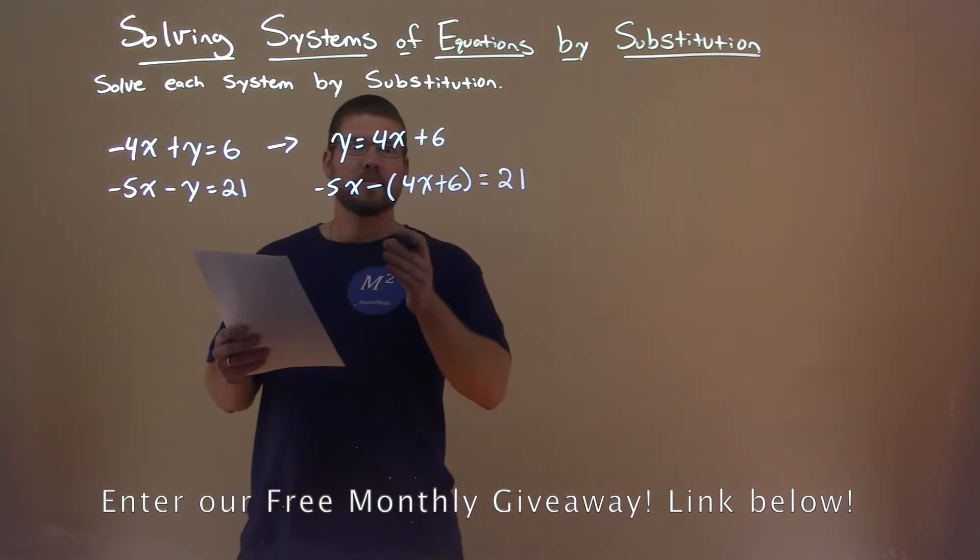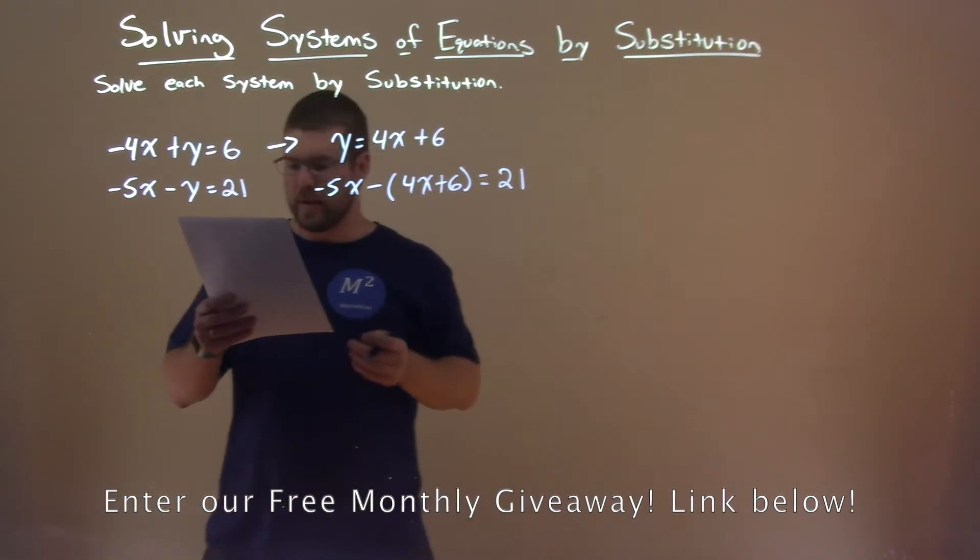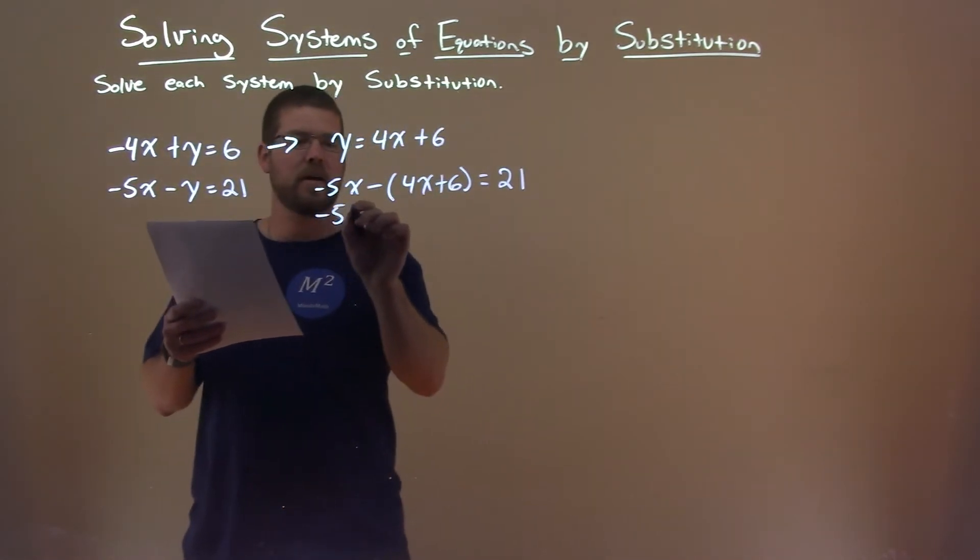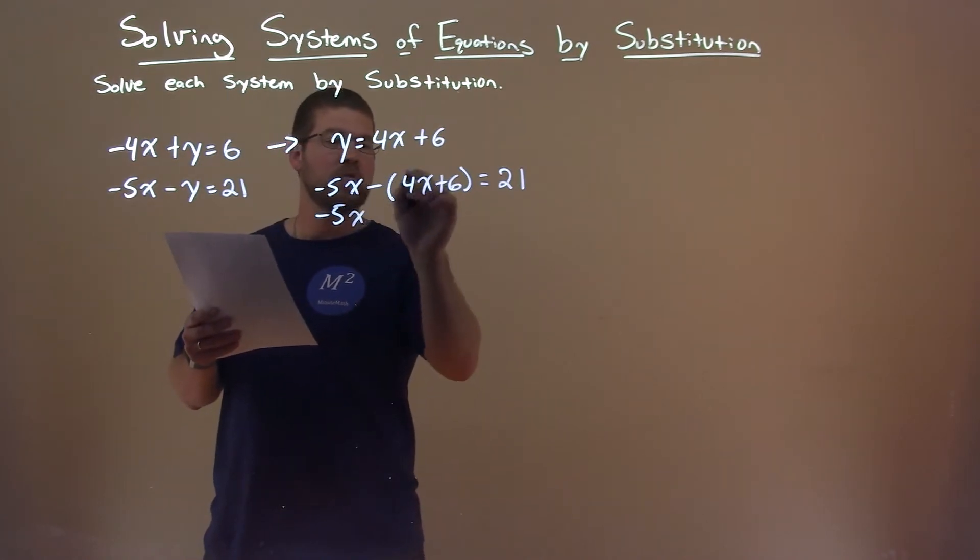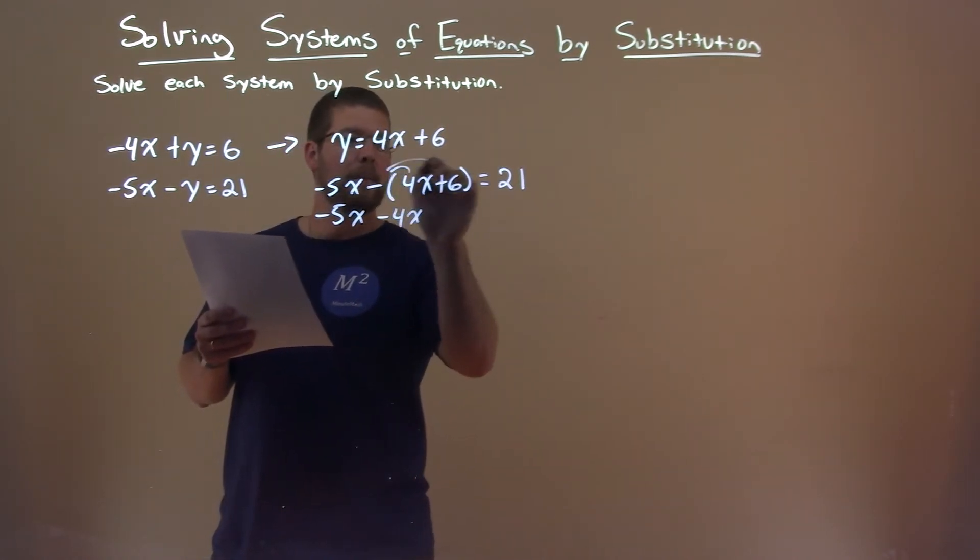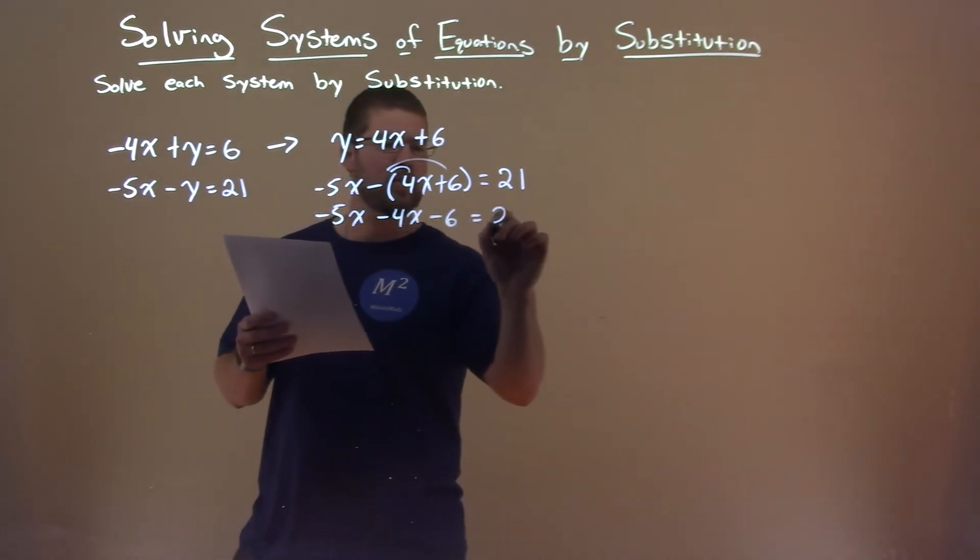From there, we want to solve for x, get x by itself. So, simplify: minus 5x, distribute the minus sign, minus 4x minus 6 equals 21.